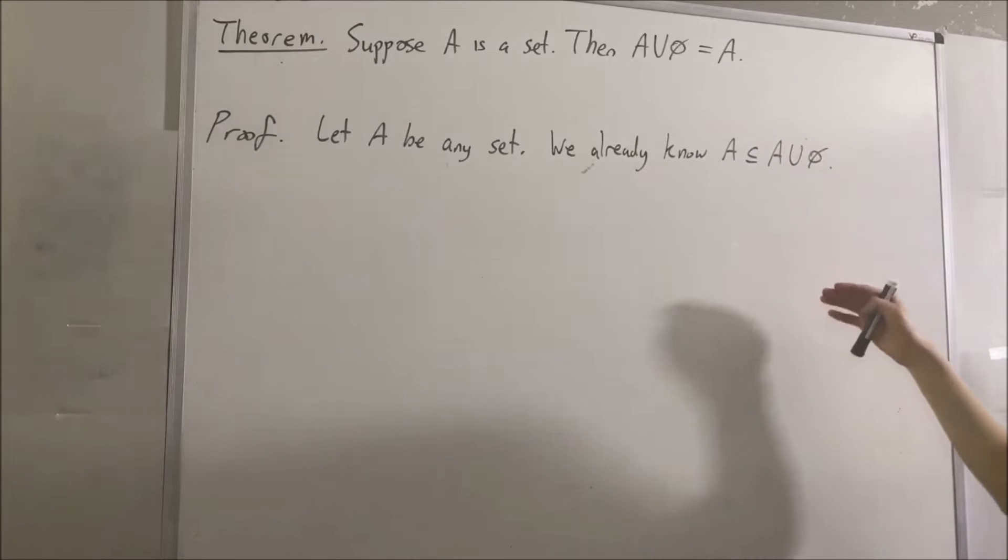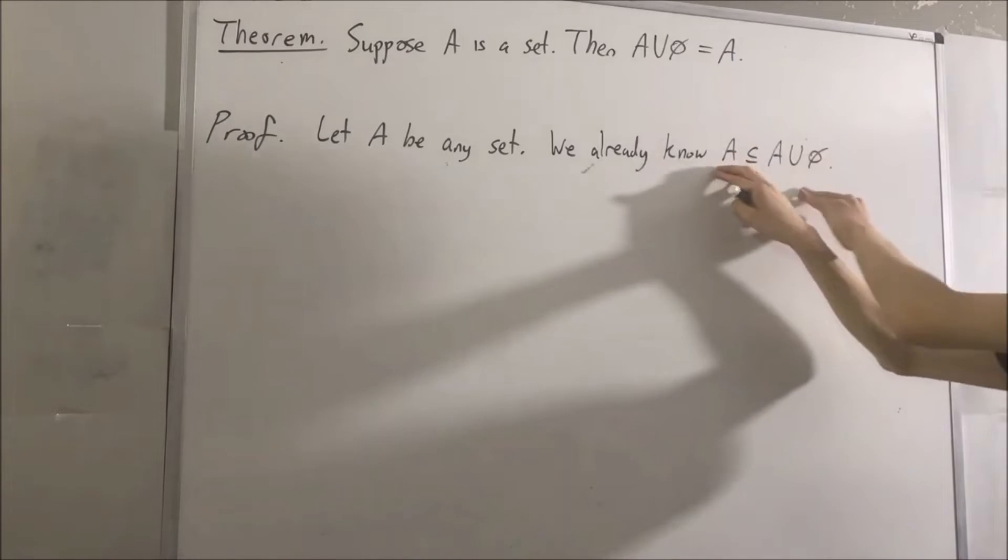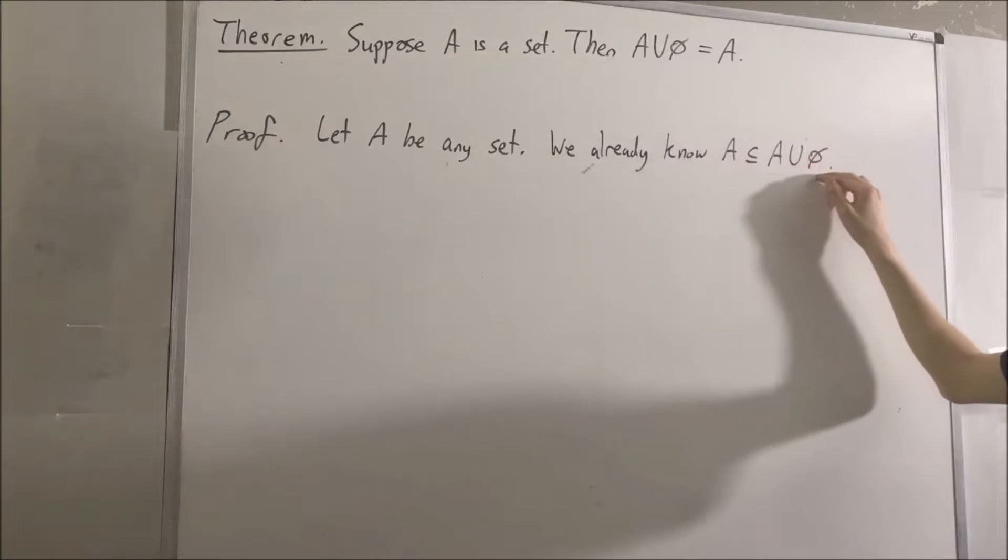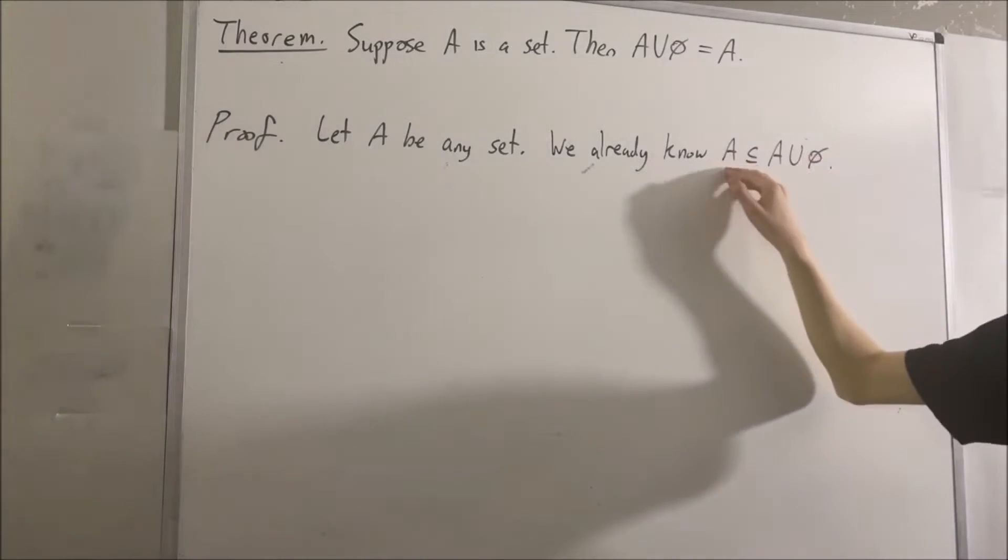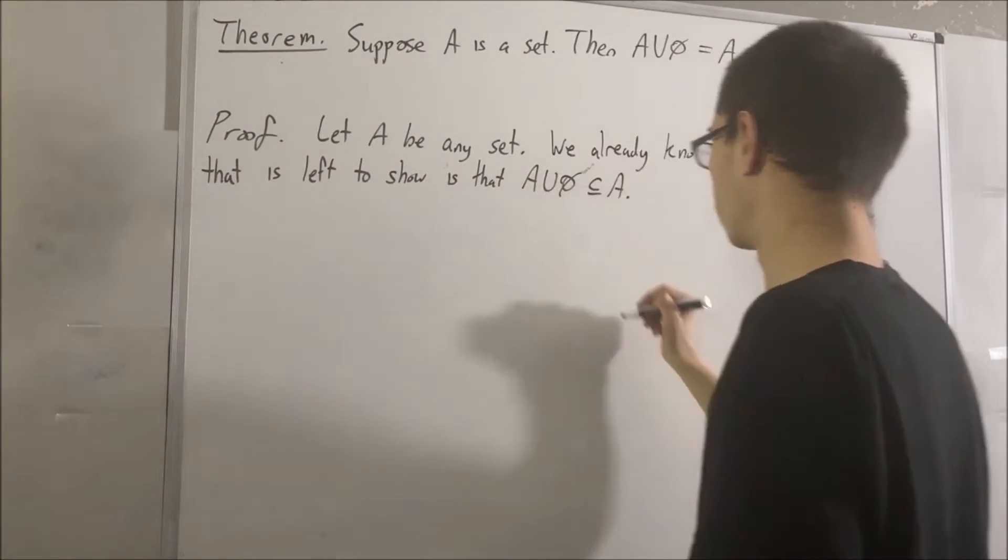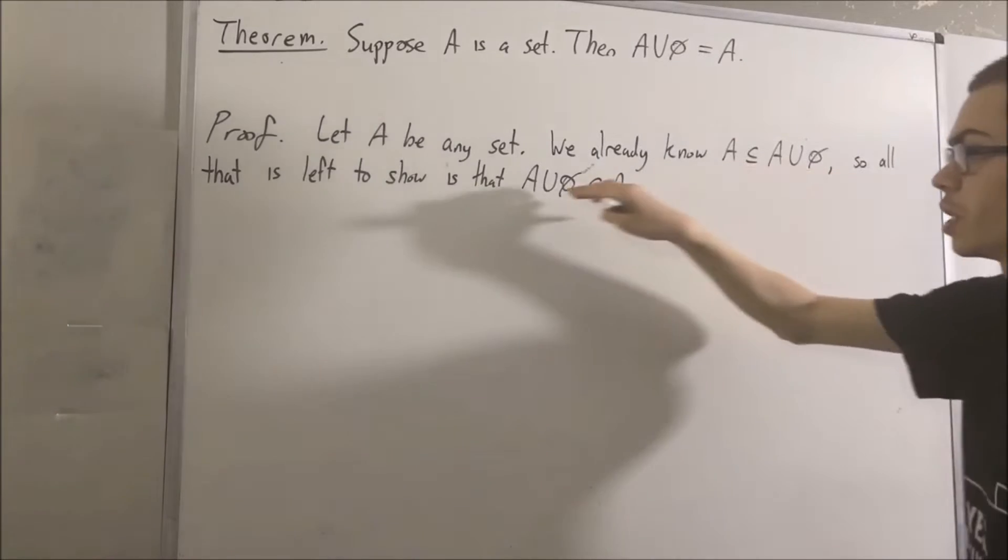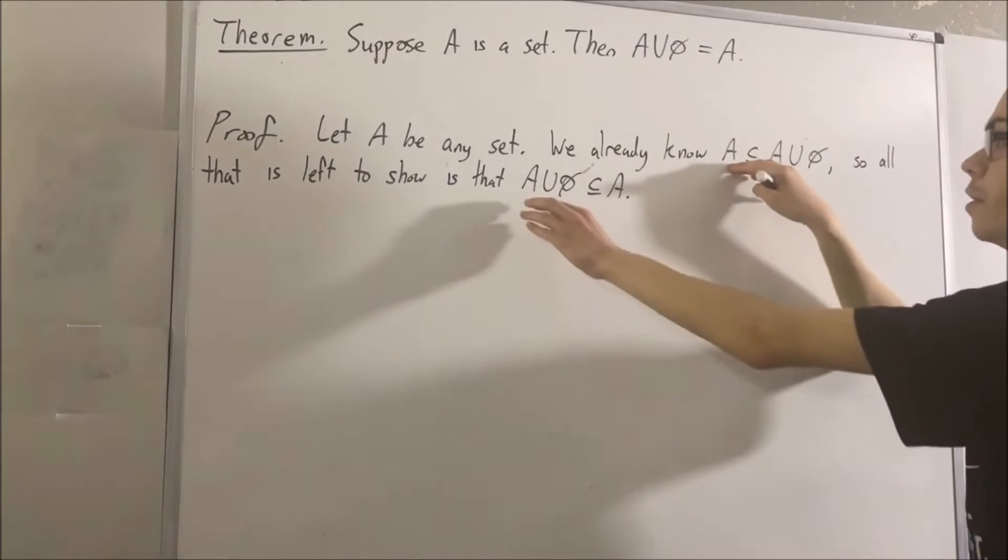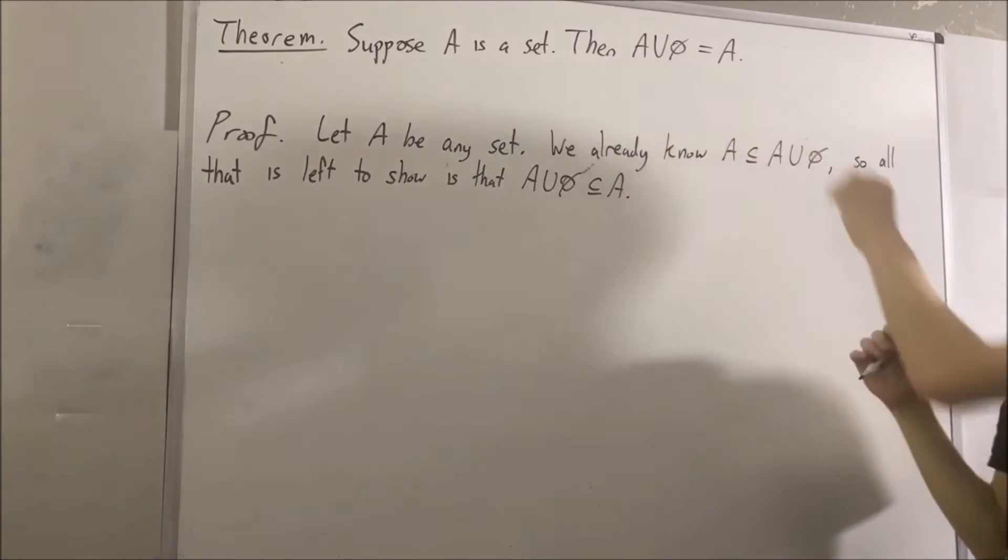So now what we're going to do is prove the other direction. We're going to prove that A union empty set is a subset of A. Because if we know that these two things are true, then these two facts together tell us that the two sets are equal.